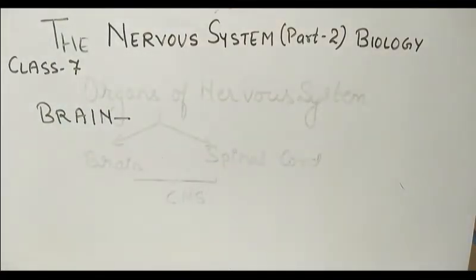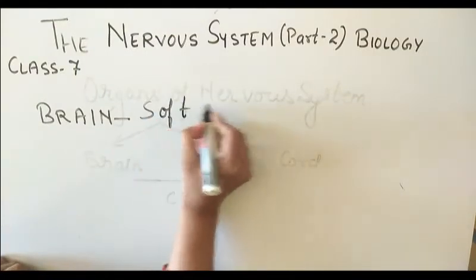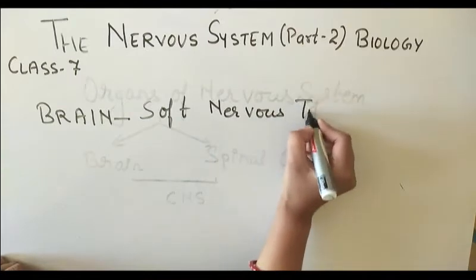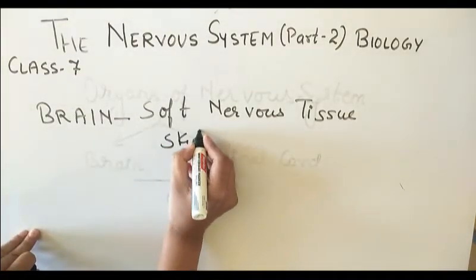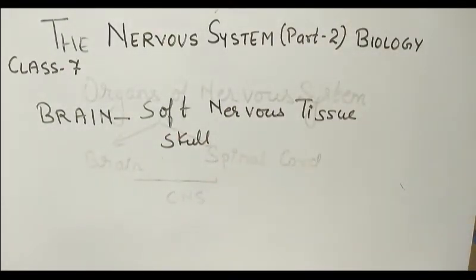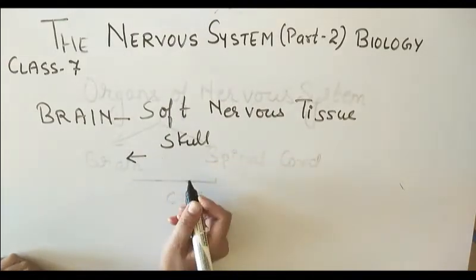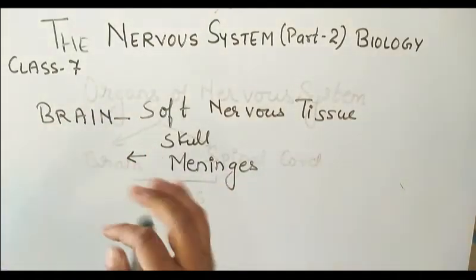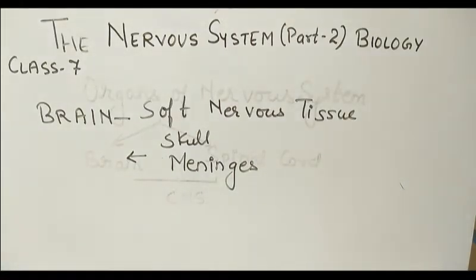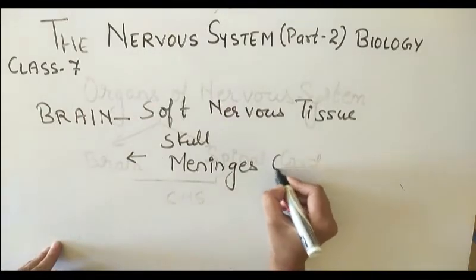The brain is a very delicate human organ made up of soft nervous tissue. Our brain has a protective bony covering known as the skull. The brain is also covered by three layers known as the meninges. Inside the meninges there is a watery fluid known as the cerebrospinal fluid.